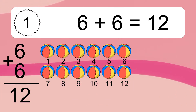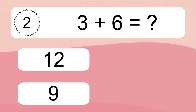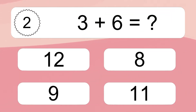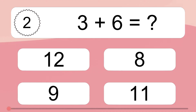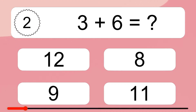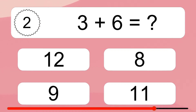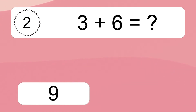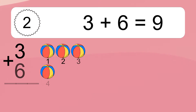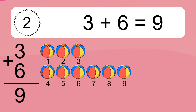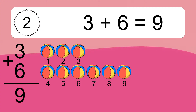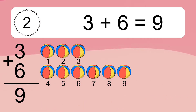Three plus six equals what? Three plus six equals nine. Let's count it: one, two, three, four, five, six, seven, eight, nine.